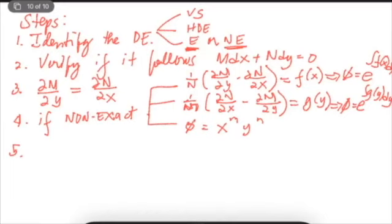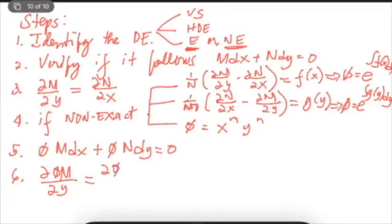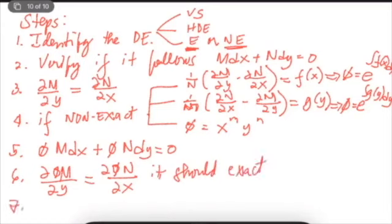Step 5: once you have the value of the integrating factor, multiply it to all terms in the M function and all terms in the N function, giving you a new differential equation. Then perform the test for exactness once again on this new equation. You are hoping that after multiplying by the integrating factor, the partial derivative of the new M with respect to y will now equal the partial derivative of the new N with respect to x, making it exact.